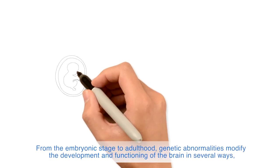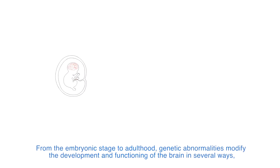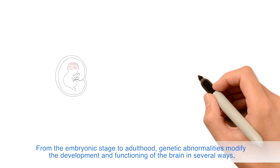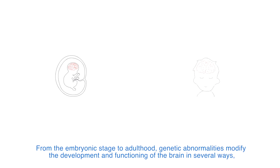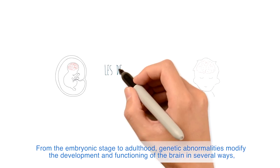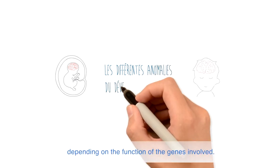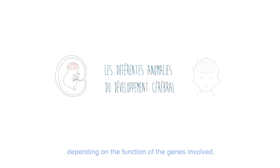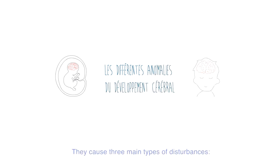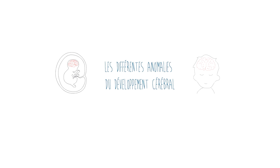From the embryonic stage to adulthood, genetic abnormalities modify the development and functioning of the brain in several ways, depending on the function of the genes involved. They cause three main types of disturbances.